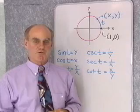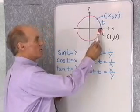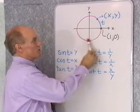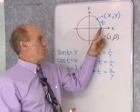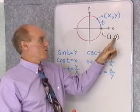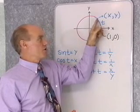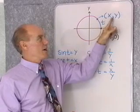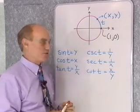Here's our third definition for the trigonometric functions, and it involves the unit circle. I've drawn the unit circle on a coordinate system. The equation of the unit circle is x squared plus y squared equals 1. It has a radius of 1, that's why the coordinates of this point are x equal 1, y equal 0. If I start at (1, 0) and move t units along the circumference of the unit circle and end at any point x, y, then here are the definitions for the trigonometric functions.